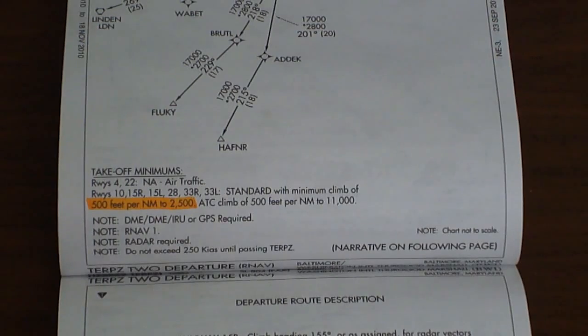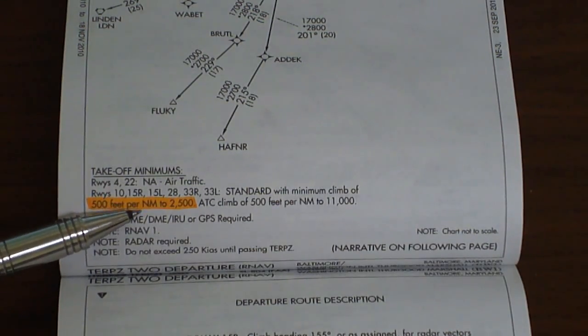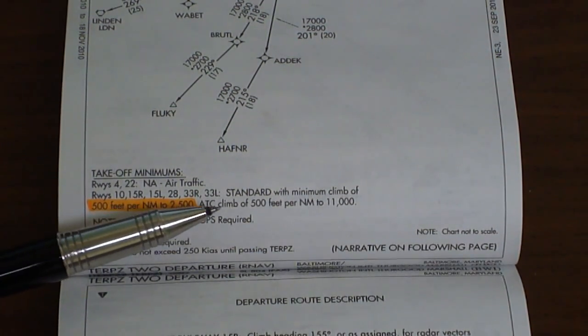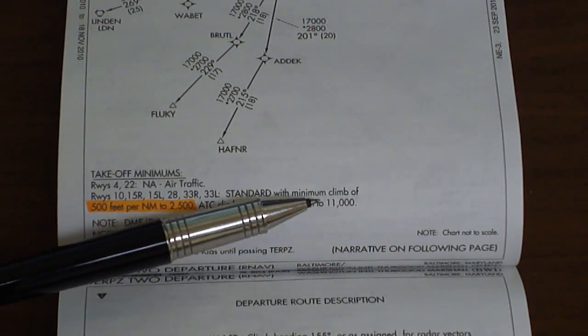Examining the bottom of the departure chart, we can see that it requires a climb of 500 feet per nautical mile up to 2,500 feet and then an additional 500 feet per nautical mile climb up to 11,000 feet.